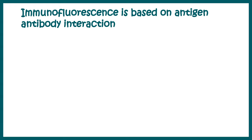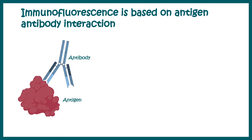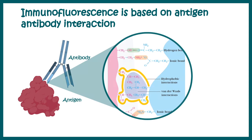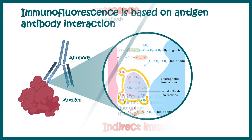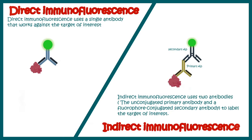Immunofluorescence is based on antigen-antibody interaction. Antigen binds with antibody with several non-covalent interactions like hydrogen bond, ionic bond, hydrophobic interaction, etc. There are two variants of immunofluorescence: direct immunofluorescence and indirect immunofluorescence.